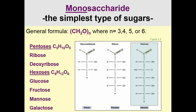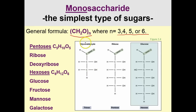Monosaccharides are the simplest type of sugar. The general formula is CH₂O to the N, where N is going to be 3, 4, 5, or 6. So if we have an N of 3, we have an example here: glyceraldehyde. This has 3 carbons and an aldehyde group on the end.